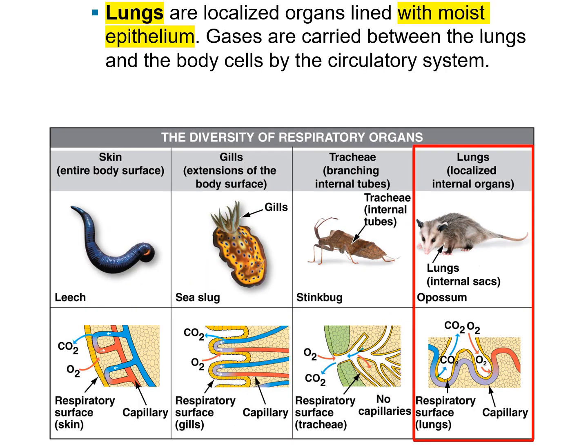Now we'll spend most of our time on the lungs. Lungs are localized organs lined with moist epithelial cells or tissue. Gases are carried between the lungs and the body cells by the circulatory system.